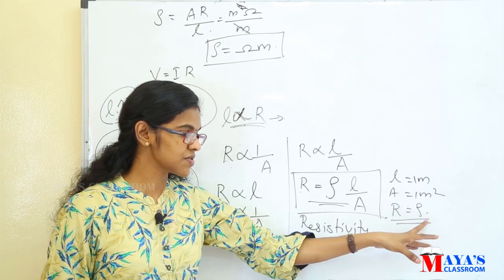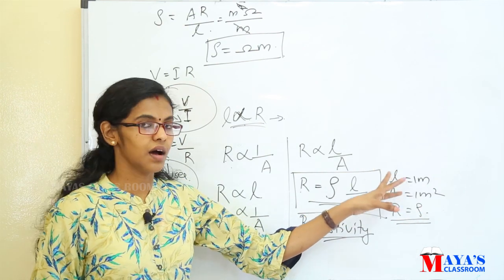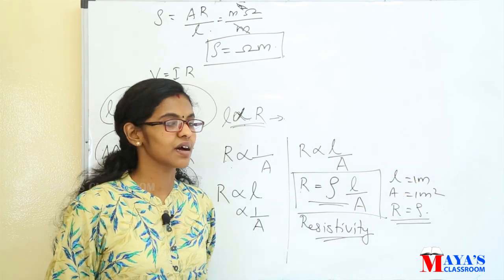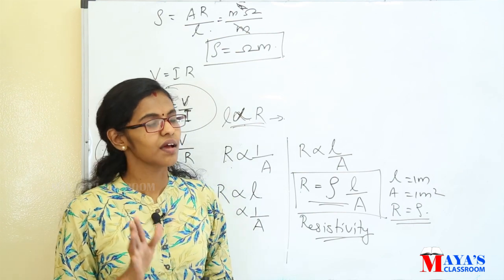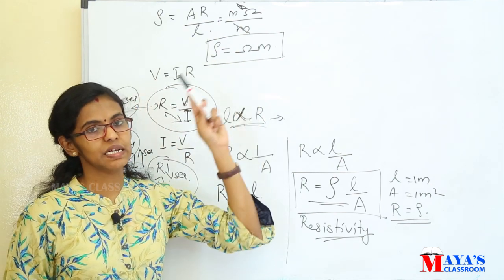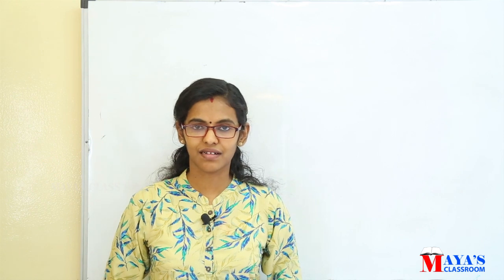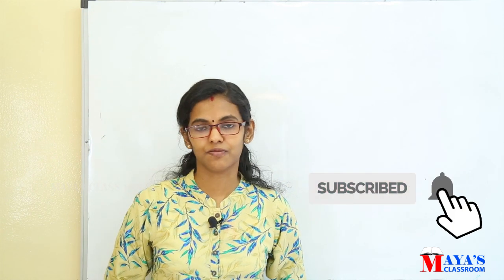Resistivity is equal to resistance when the conductor has unit length and unit area of cross-section, and the unit of resistivity is ohm meter. Hope you understood today's class on resistance and resistivity of a conductor. If you like the class, please press the like button and share with your friends, and give your opinion as a comment.